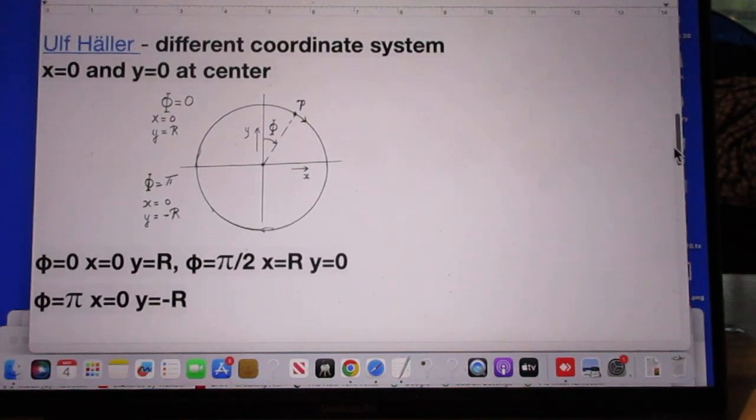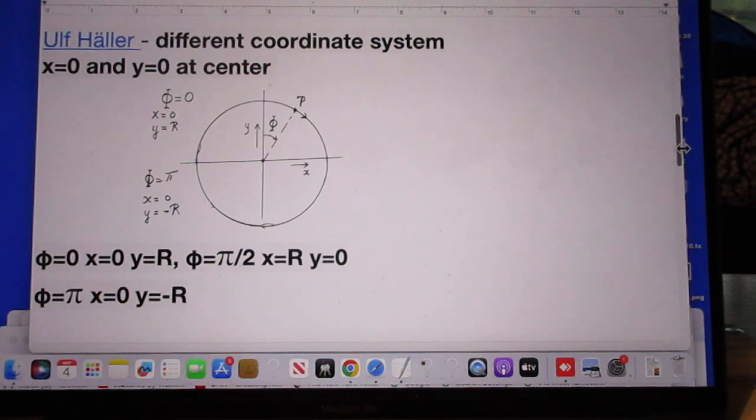Let's now go to Ulf Heller. I first have to say that he chooses a different coordinate system from mine. There is nothing wrong with that. Since we are only dealing with velocities, you can choose your coordinate system anywhere you want to. That will not affect velocities. So he chooses x is zero and y is zero right here at the center, whereas I chose it here, remember? So he chooses it here, nothing wrong with it.